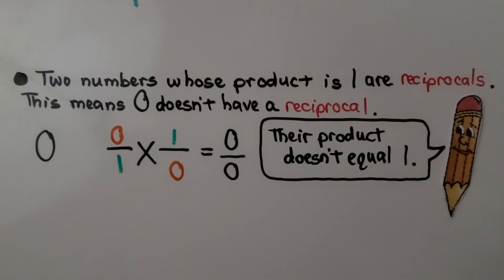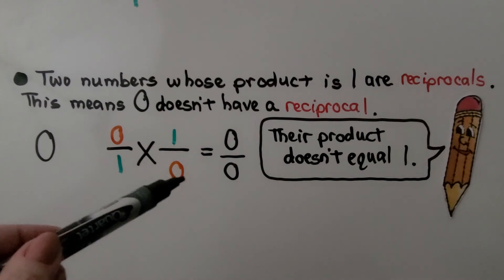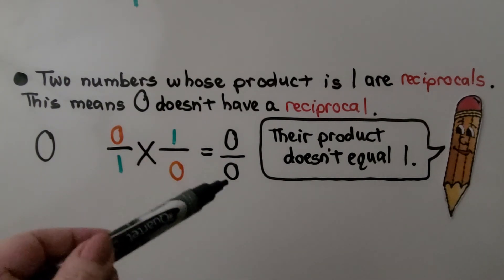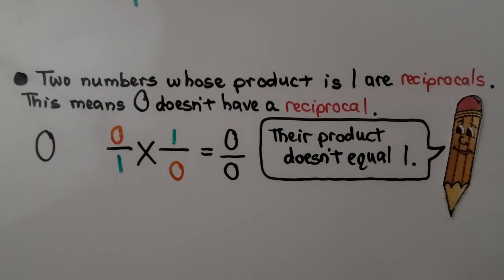Two numbers whose product is 1 are reciprocals. This means 0 doesn't have a reciprocal. If we write 0 over 1 for a denominator and switch it around, when we multiply 0 times 1, that's 0, and 1 times 0 is 0. Their product doesn't equal 1. So 0 doesn't have a reciprocal.